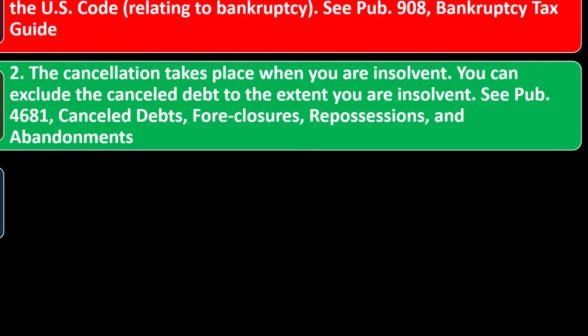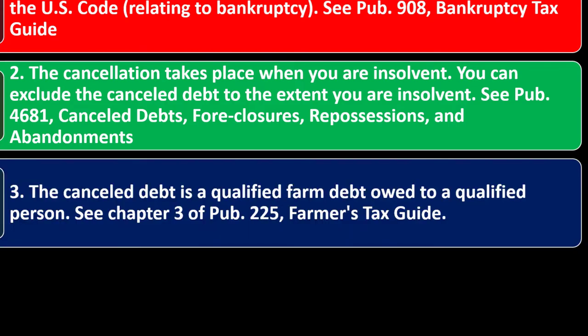Number two: the cancellation takes place when you are insolvent — meaning you're not able to pay your debts. You can exclude the canceled debt to the extent you are insolvent. You have to prove insolvency and determine if you qualify. For that, see Publication 4681, Canceled Debt, Foreclosure, Repossession, and Abandonments.